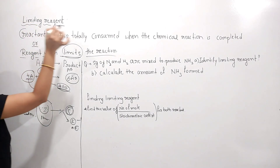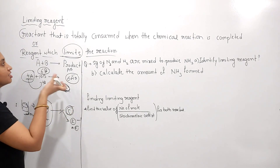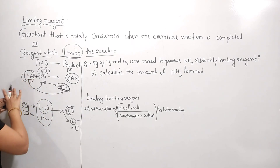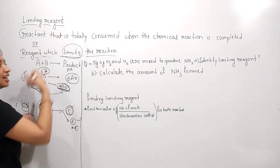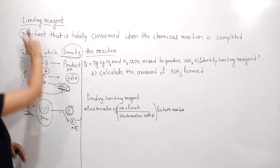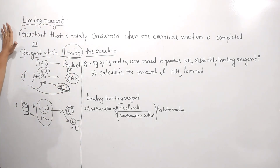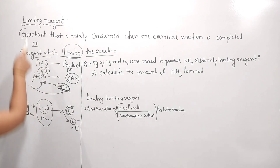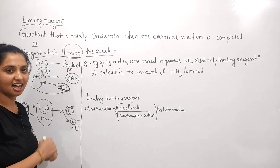So the reactant A is responsible for stopping the reaction — A is our limiting reagent. The reactant that is totally consumed when the chemical reaction is completed is called a limiting reagent. A was completely consumed to get the 4AB product. So to summarize: the reagent which stops the chemical reaction, or the reactant which is completely consumed when the chemical reaction is completed, is called a limiting reagent.